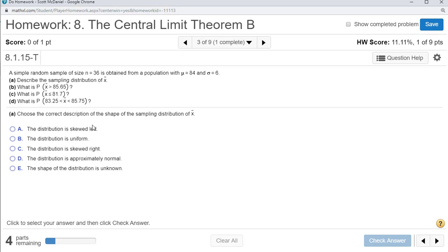Part one, choose the correct description of the shape of the sampling distribution of X bar. When we see that n is greater than 30, or 30 is sort of our magic number, that means it's going to be approximately normal.